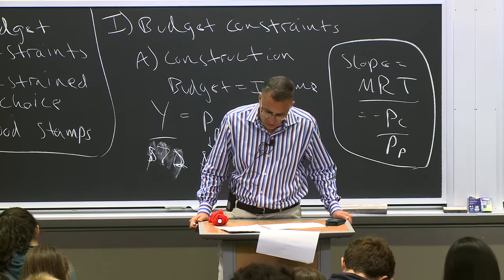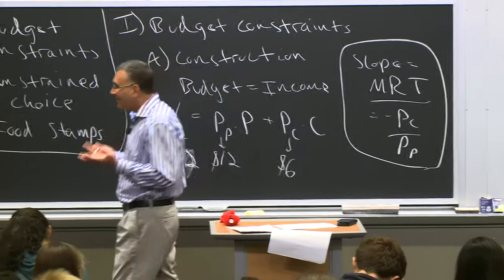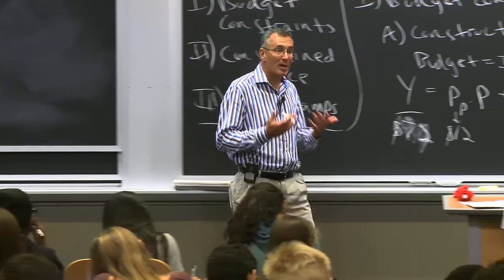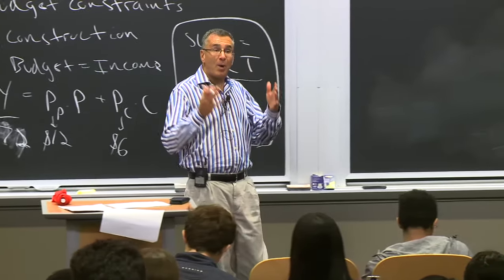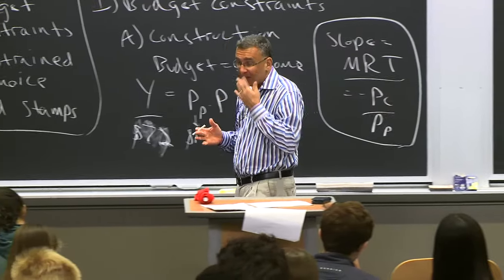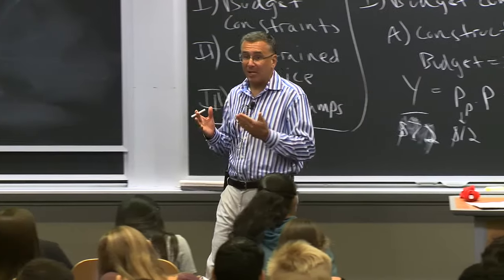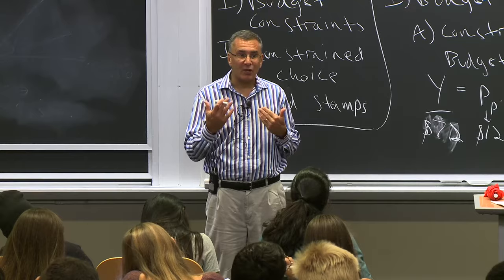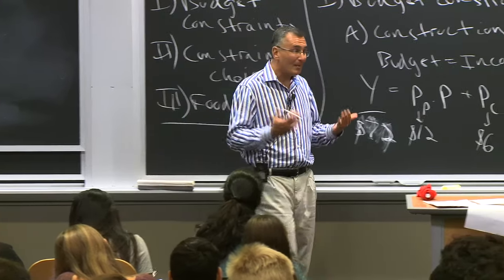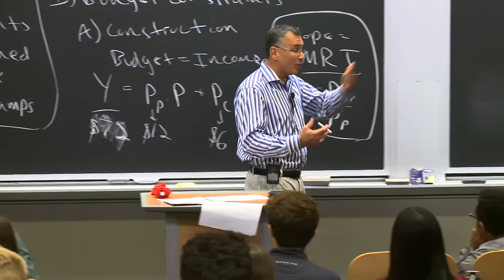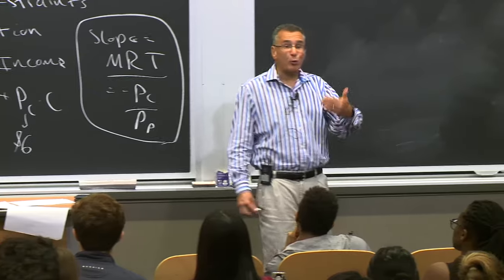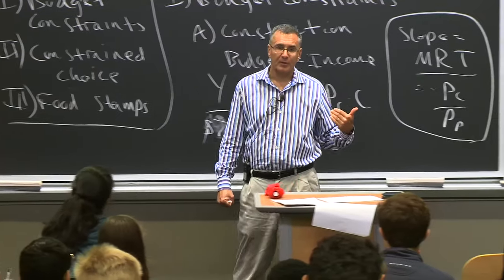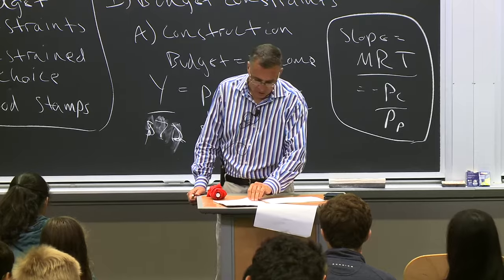This class is not alchemy — we're not literally transforming pizza into cookies, but we're effectively doing the same thing. Given a fixed amount of money that we're going to spend entirely, the more you spend on pizza the less you spend on cookies. So through the budget constraint, we are effectively transforming one good into the other. By having more of one, we get less of the other.